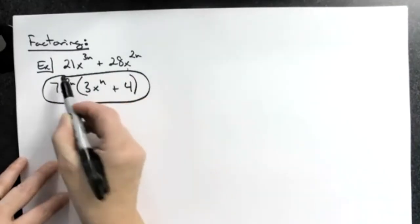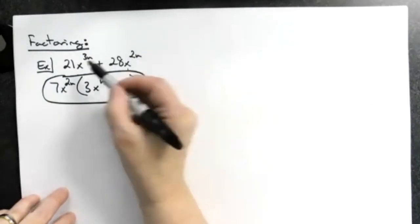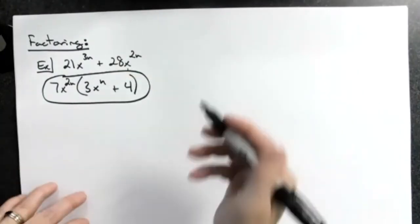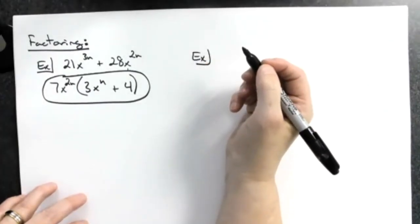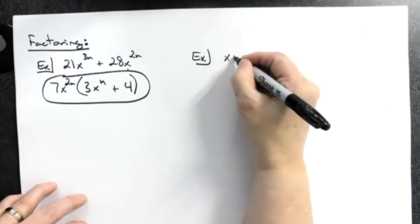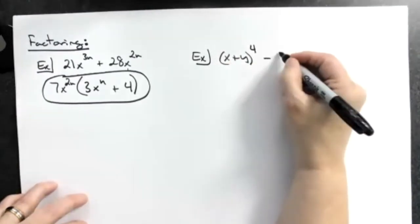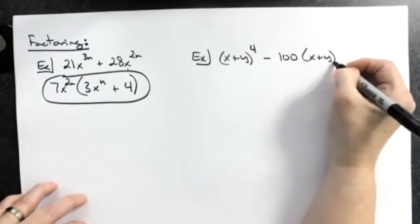So while that one was just a take out the greatest common factor, it involved those different types of exponents and they will definitely hit that. Now let's go with same concept but multi-steps here. Let's suppose we had like an x plus y to the 4th minus 100 x plus y quantity squared.